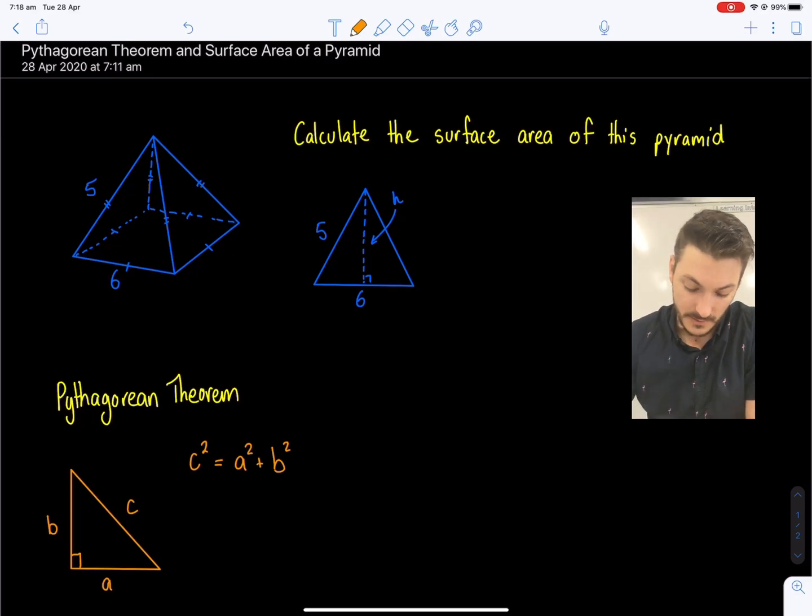So we call C, we call this side length, this is called the hypotenuse. And it's always the longest side on a right angle triangle. It's always opposite the right angle. So the hypotenuse squared is always equal to the other two side lengths squared and then added together. So we're going to use this concept and this formula to solve for our unknown side length H in our other one.